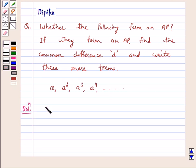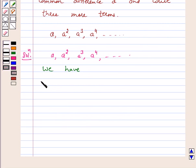The given list of numbers is A, A square, A cube, A raised to power 4 and so on. We have A2 minus A1 is equal to A square minus A.